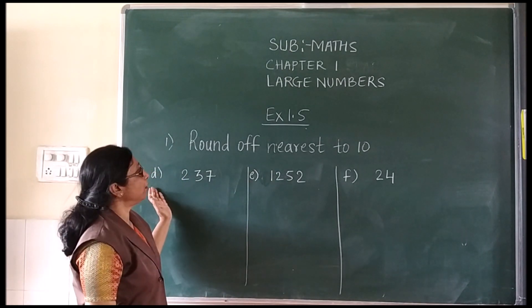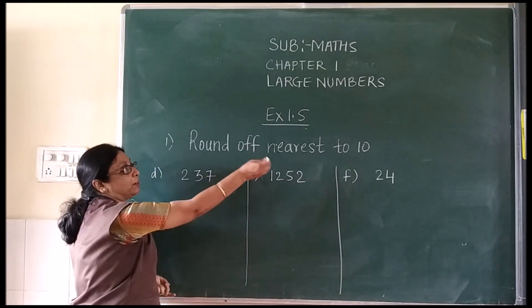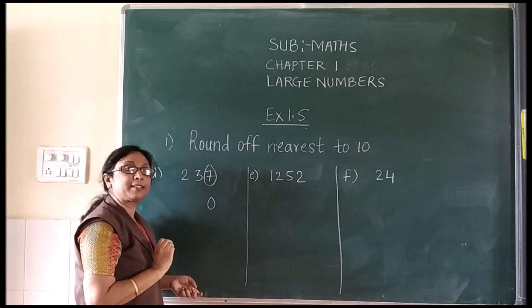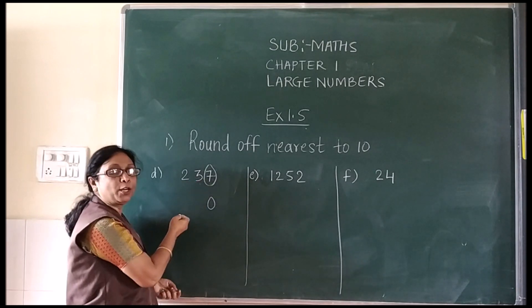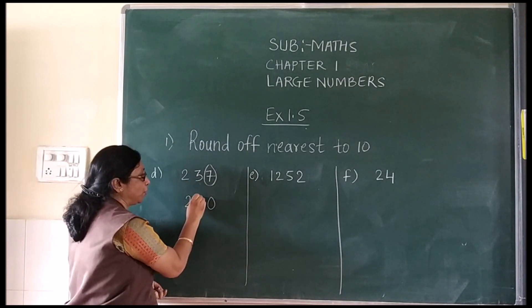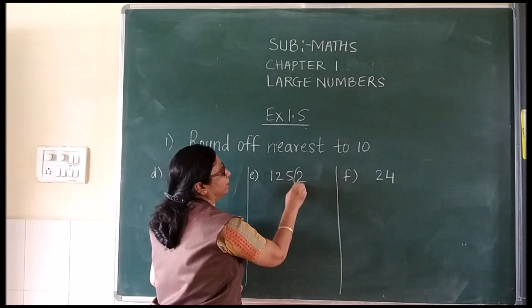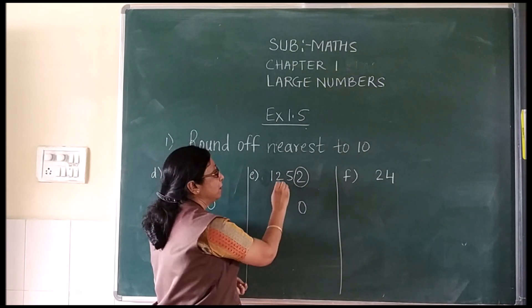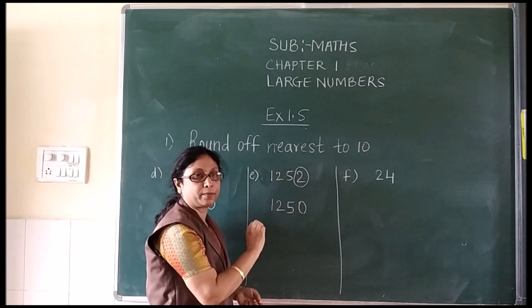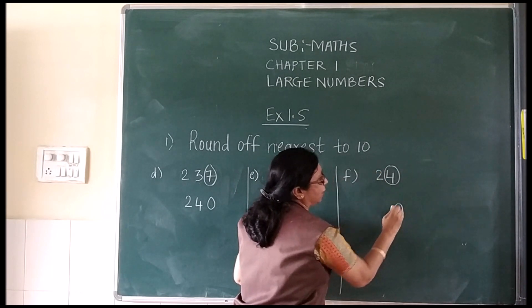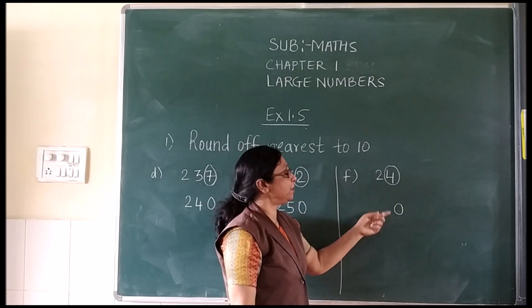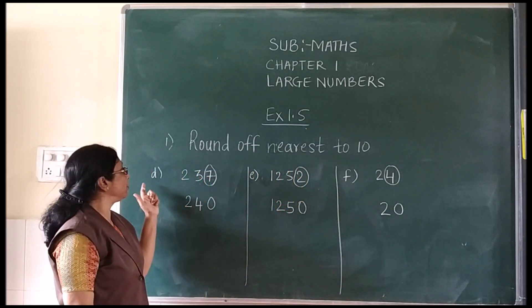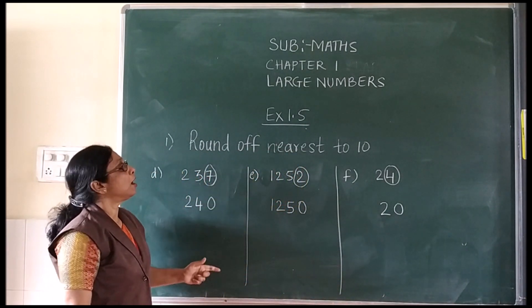Now we will see D, E and F sums also. Round off nearest to 10 — circle 1 digit, place 0. The circled digit is 7, which is more than 5, so add 1 to the outside number: 23 plus 1 = 24. For E, circle the digit, write 0. The circled digit is 2, less than 5 — outside number stays as it is, no change. For F, circle the last digit, put 0 below: the digit is 4, less than 5, so outside number stays as it is. In this way we have covered round off nearest to 10 through F.